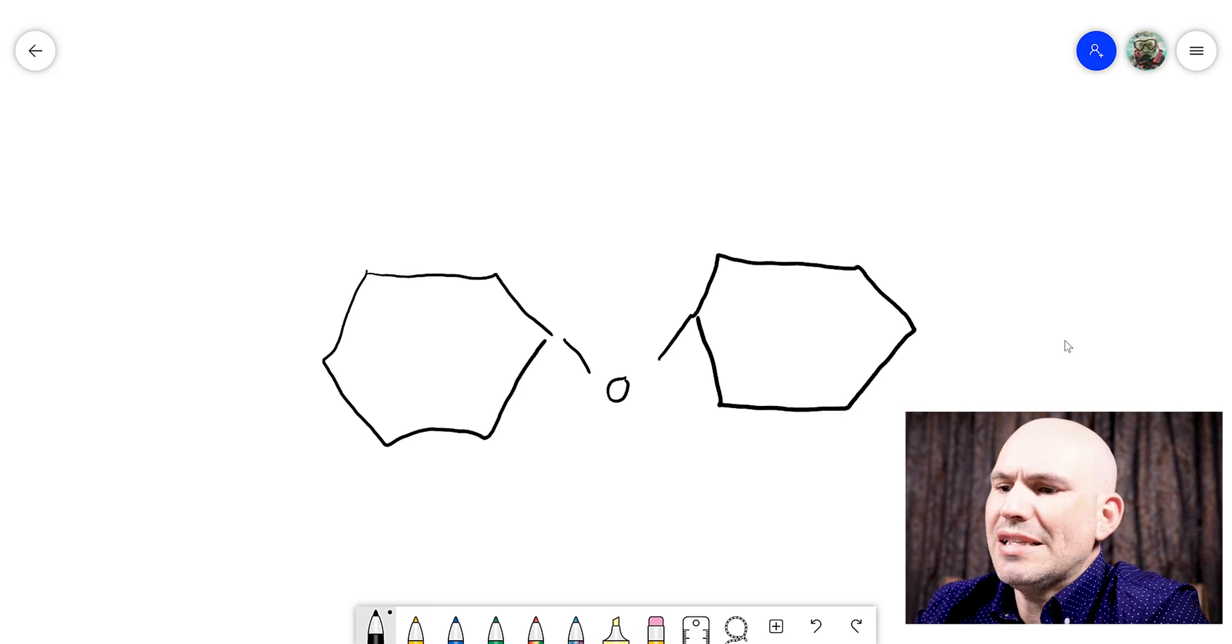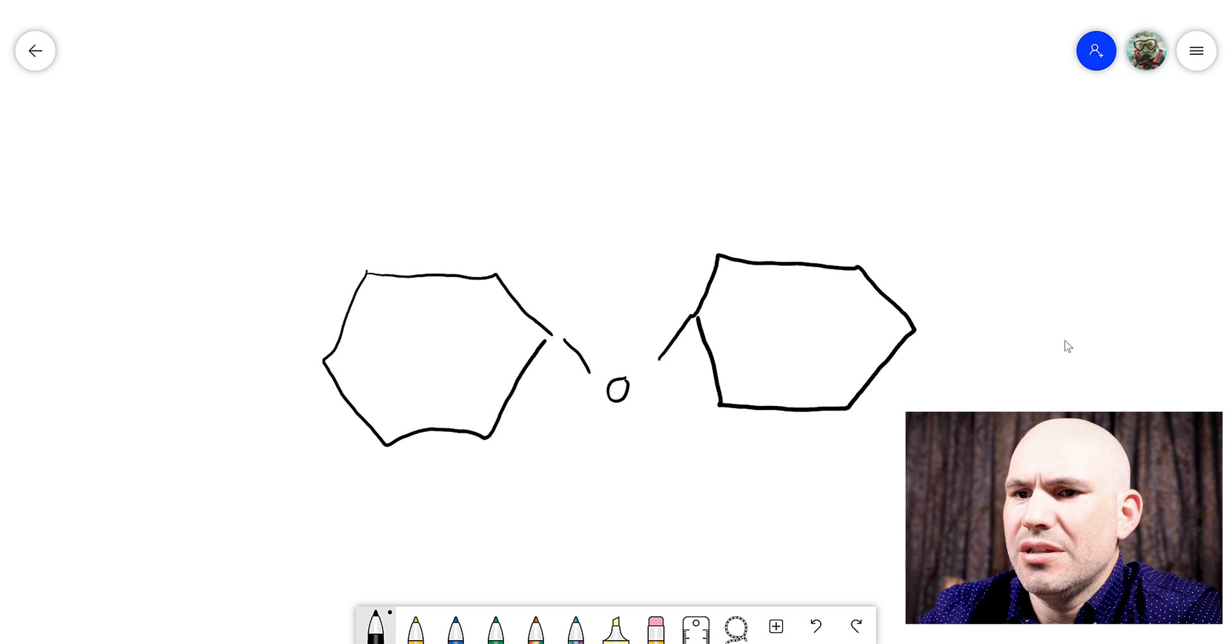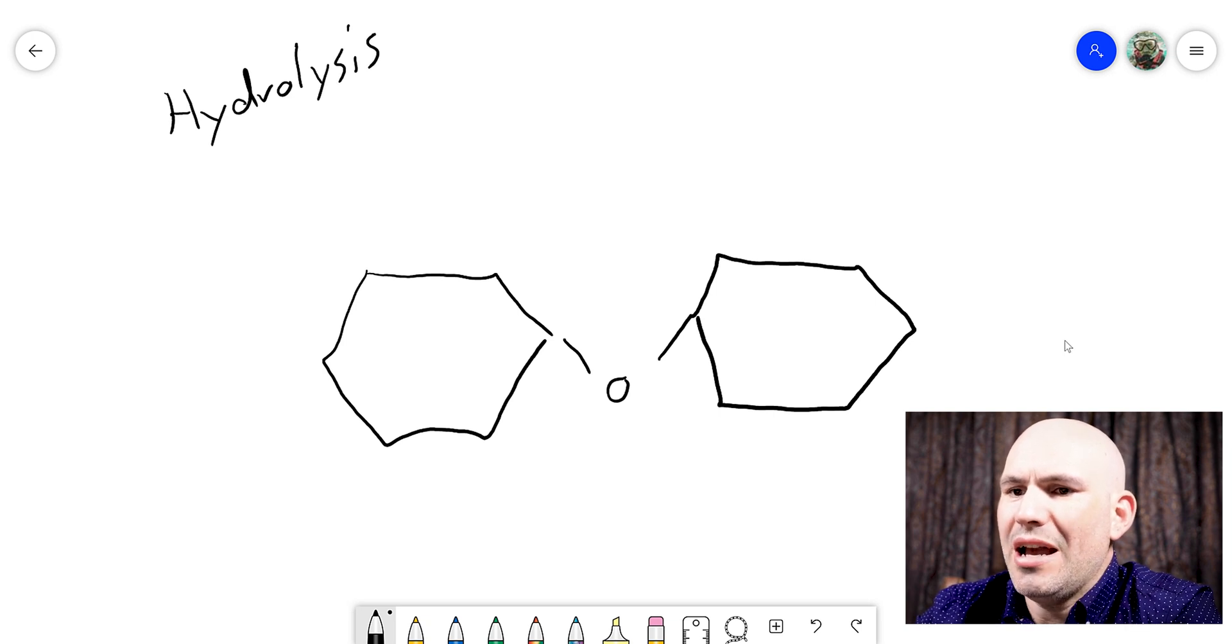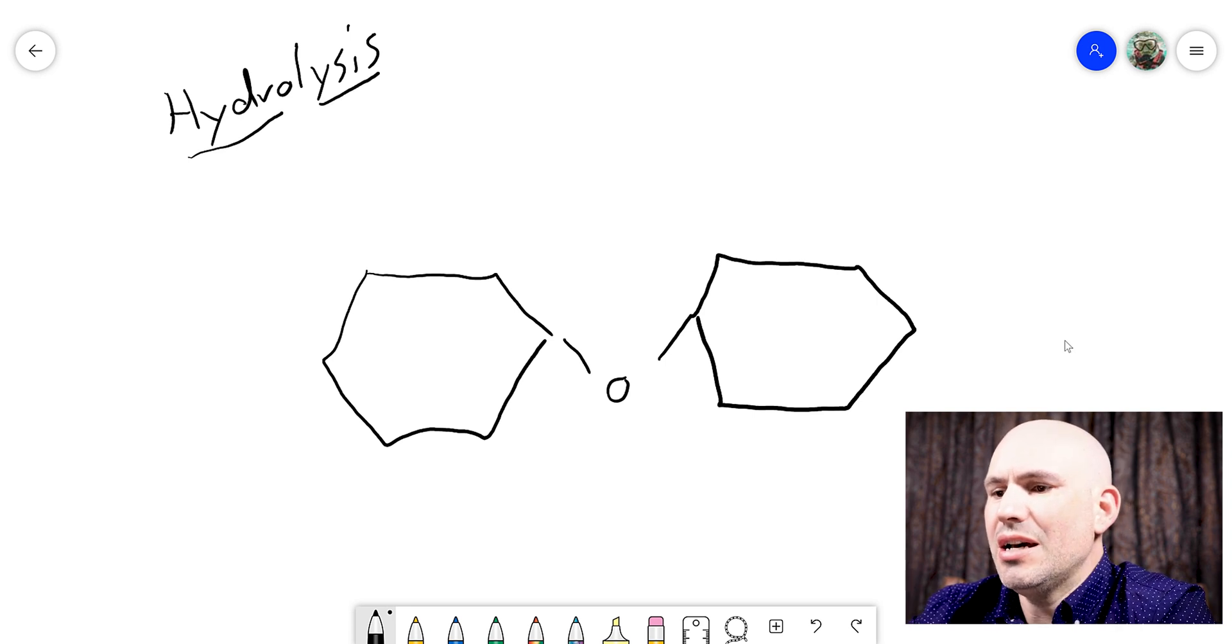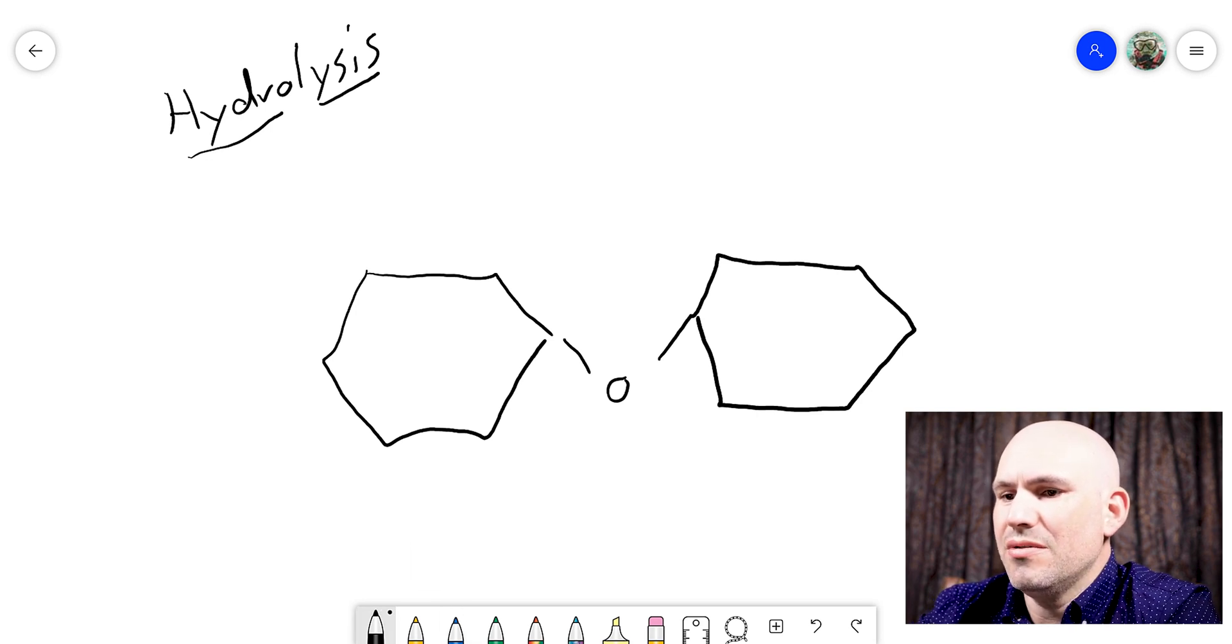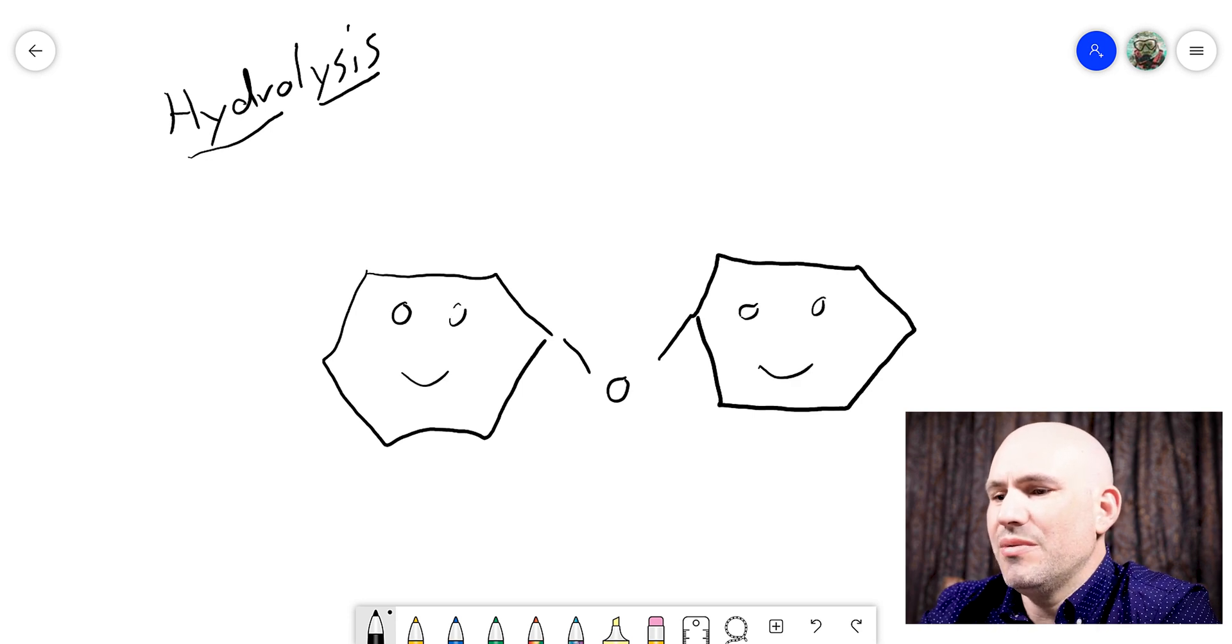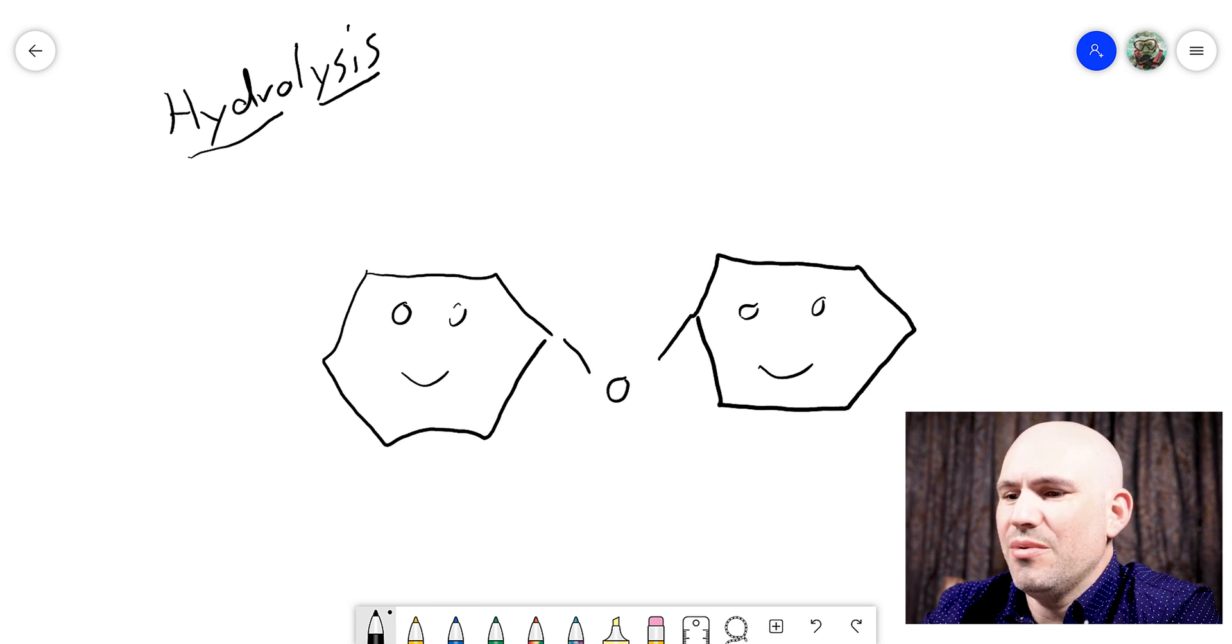Now, if you want to separate monomers, if you want to break them apart, you're going to do a process that is called hydrolysis. Now, remember that hydro means water and lysis means to cut. So this is cutting with water, hydrolysis. And so if you want to get these two to separate, so you got these two sweet sugars that like each other. They're familiar with each other. You want to separate them. You're going to spray them with water. You're going to add a drop of water.